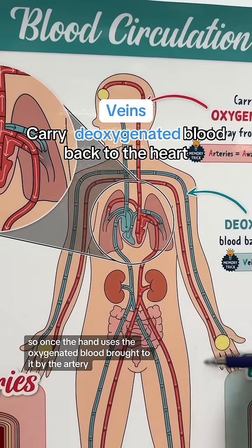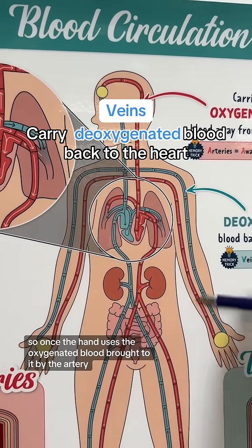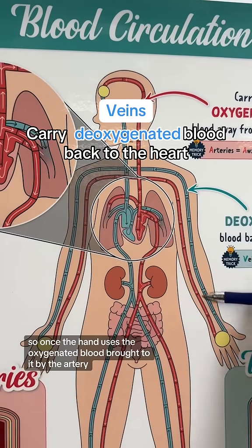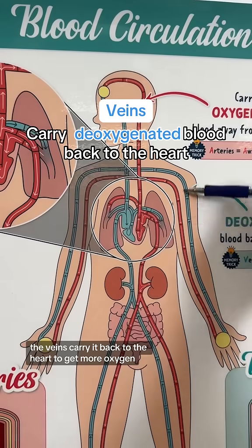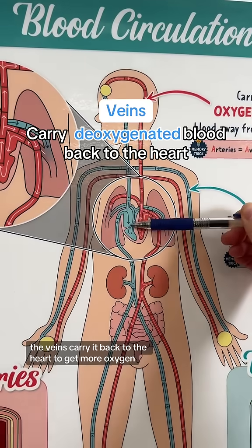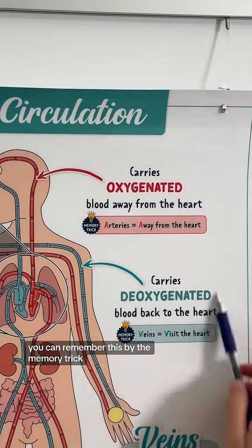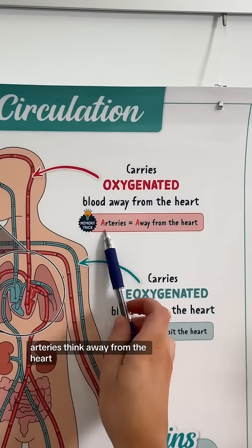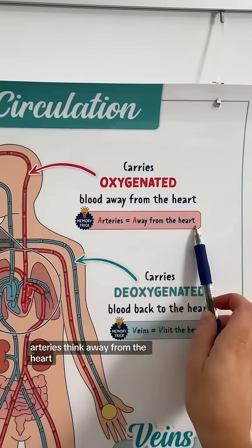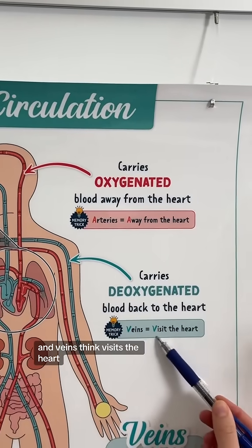So once the hand uses the oxygenated blood brought to it by the artery, the veins carry it back to the heart to get more oxygen. You can remember this by the memory trick: arteries think away from the heart, and veins think visits the heart.